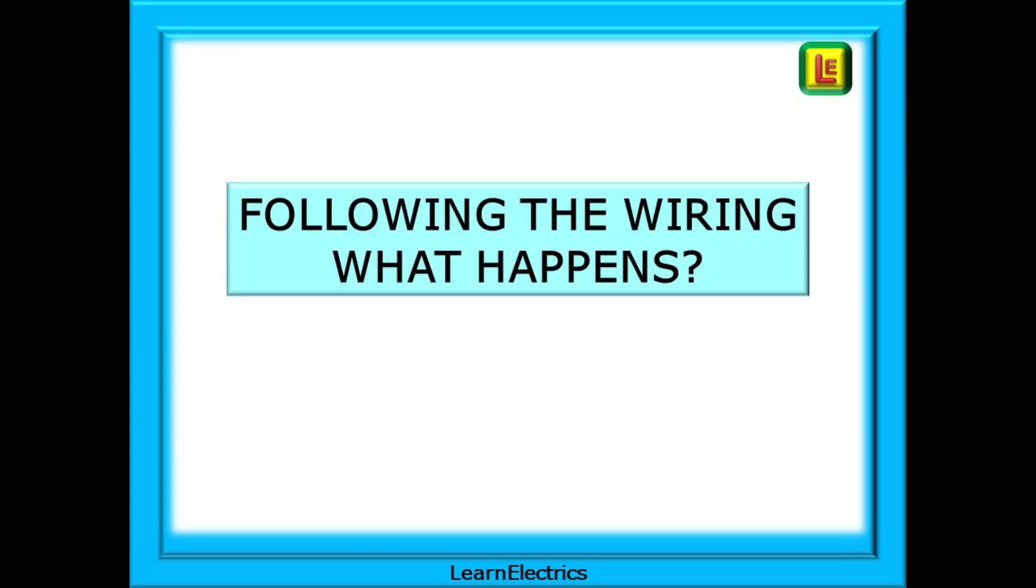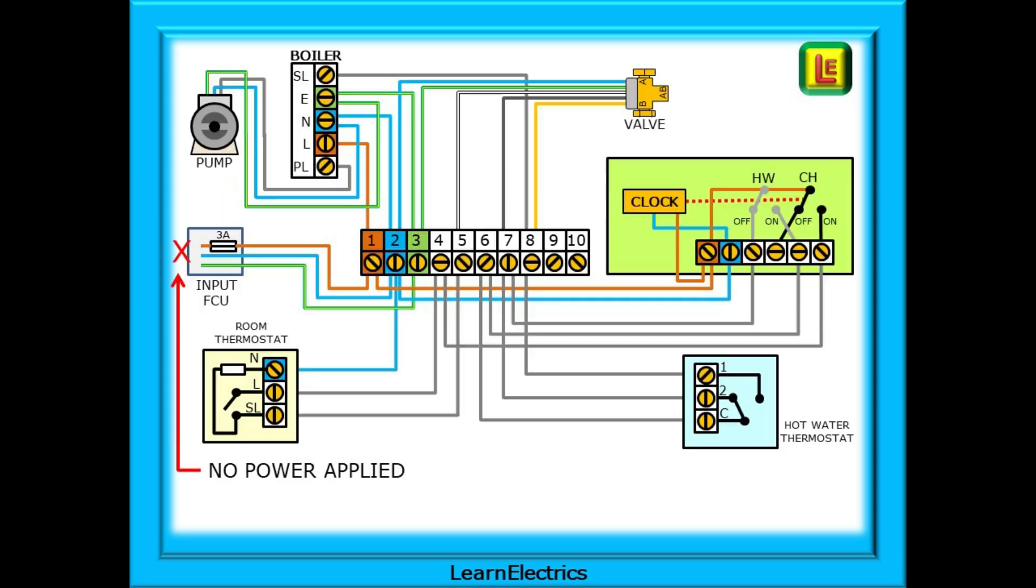We can follow the wiring through the system now and see what happens as the thermostats operate. This is our starting position. The circuit is off, no power applied. The two thermostats are shown in the up to temperature positions. This is a good diagram to become familiar with before we start applying power and activating different parts of the system. As we mentioned earlier, in this state the spring inside the valve will open output port B.